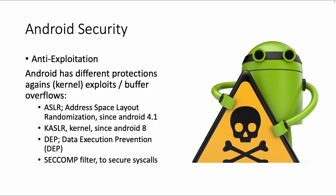The last part of Android security is anti-exploitation. Even if you're able to exploit a vulnerable app, there are still some protections similar to other Linux-based applications — even for apps running in Java within a virtual machine. If you have a vulnerability at the operating system level you might still be able to exploit it, but there are security measures like ASLR (address space layout randomization) since Android 4, kernel address space layout randomization (KASLR) since Android 8, data execution prevention, and measures to secure syscalls. These topics are more advanced and will be covered in more advanced training. For now, this is all you need to know about Android security basics.